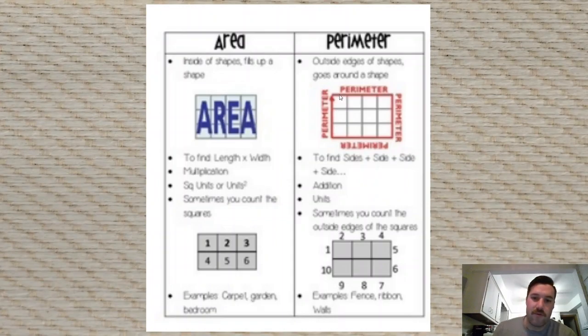So if I was finding the area, what I would do is I would find the number of squares that could fit in there. So the number of square units that could fit in there. So 1, 2, 3, 4, 5, 6, 7, 8, 9, 10, 11, 12. So I could fit 12 squares in here. So that would be 12 square units.